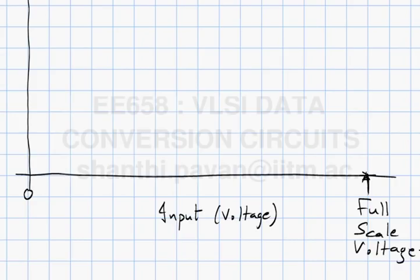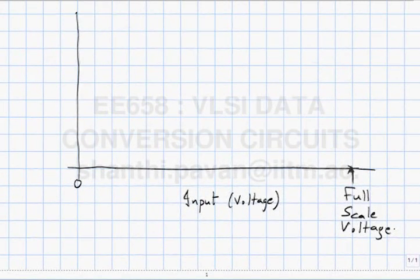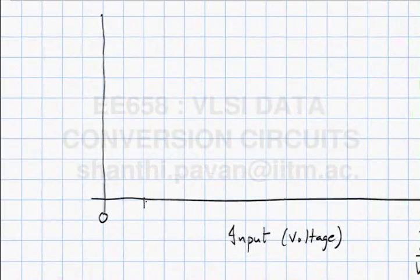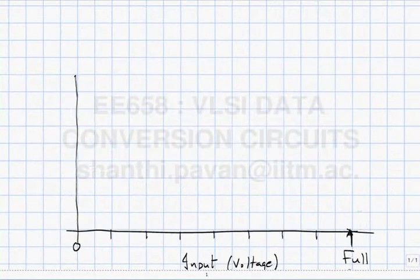Without loss of generality, I will just talk about voltages. By what is commonly called a uniform quantizer, what we are trying to do is divide this full-scale range into an equal number of bins. In this case, I divided the input into 8 equal bins.